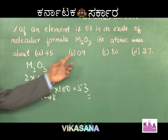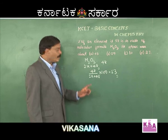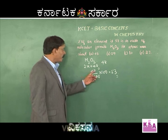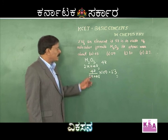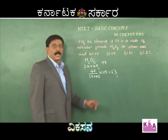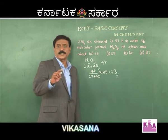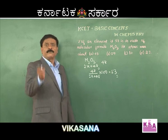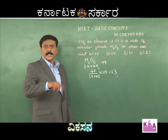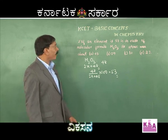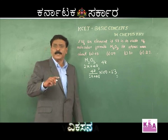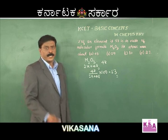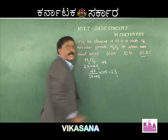Now come to the next option. The next option is 9. When you substitute x as 9, this would be 48 by 66, nearly two thirds, and two thirds of 100 is 66.6 percent — but we want 53. Note that 53 is in between 33 and 66, therefore the right answer should be between 45 and 9, and hence the correct option is option D: 27.